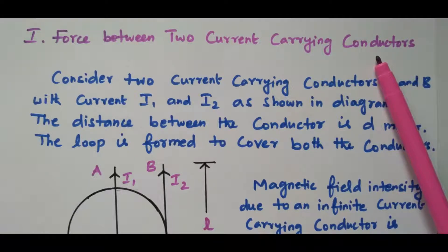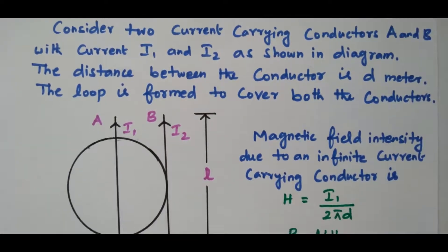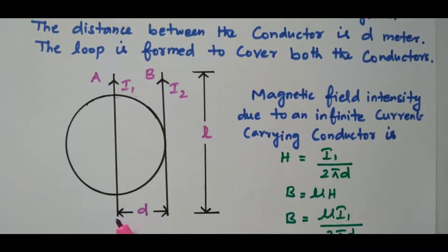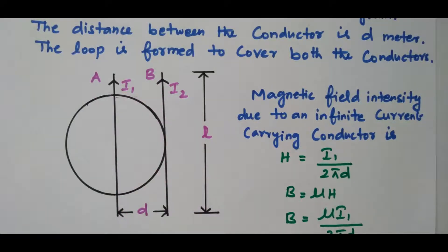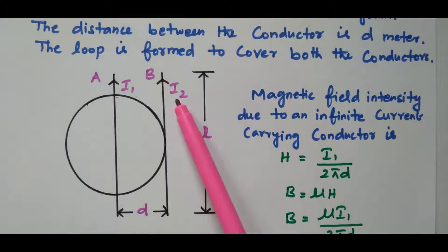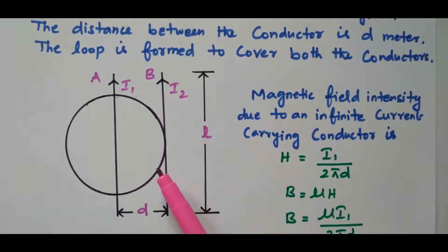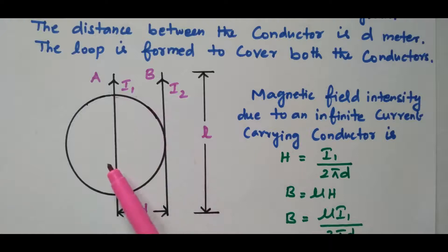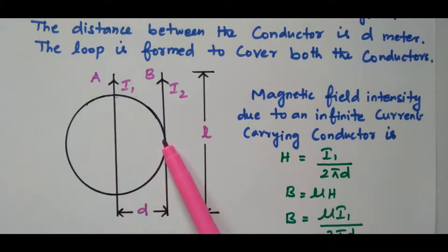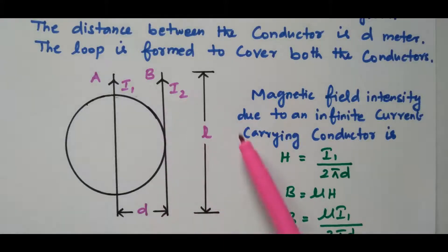There are two current carrying conductors available — what is the force available between them? Consider this diagram. This is conductor A and this is conductor B. The current flowing through conductor A is I1, and the current flowing through conductor B is I2. In order to apply Ampere's law, we construct one current loop covering both conductor A and conductor B. The diameter is D meters and the length of the conductor is L meters.